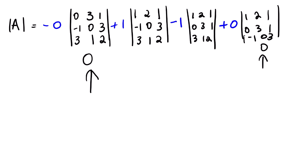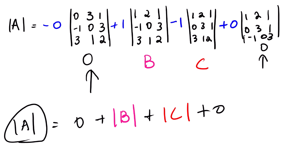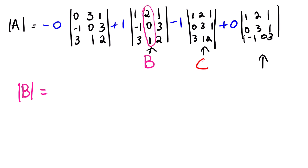We need to find the sum of all these 3x3 determinants. Let's call the second sub-matrix B and the third sub-matrix C. The determinant of A equals the determinant of B plus the determinant of C (the zero terms vanish). So our aim now is to find the determinant of B and C.